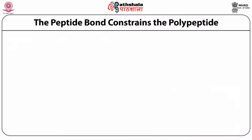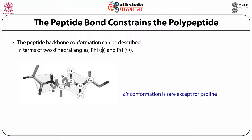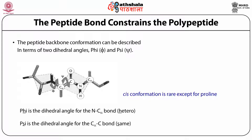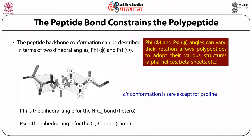The peptide bond constrains the polypeptide chain. The peptide backbone conformation is described in terms of two dihedral angles: phi and psi. Phi is the dihedral angle between the N and C-alpha bonds, while psi is the dihedral angle for the C-alpha and C bonds. These phi and psi values can vary, allowing the polypeptide chain to adopt structures such as alpha helices and beta sheets.